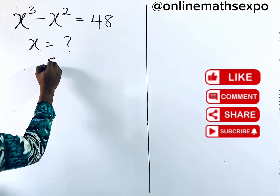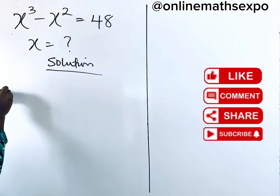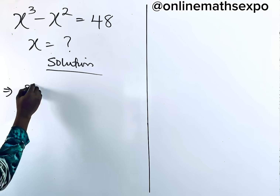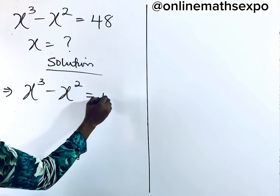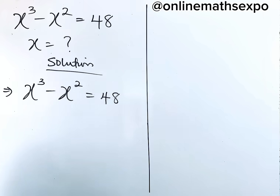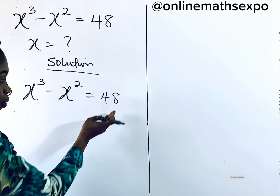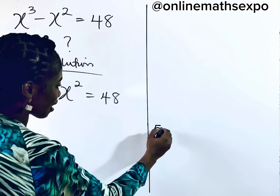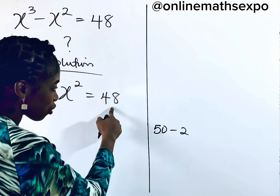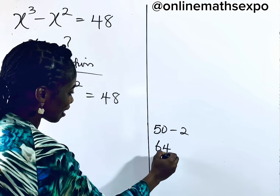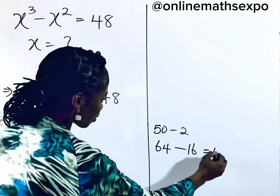To do this, we're going to begin with the solution. So what we have, we can rewrite it to have x cubed minus x squared is equal to 48. Now, this 48, we can choose to rewrite it in another form. We know that 48 is the same as 50 take away 2. Also, 48 is the same as 64 take away 16 — when you subtract this, it gives you 48.